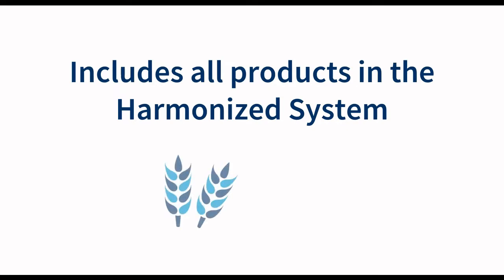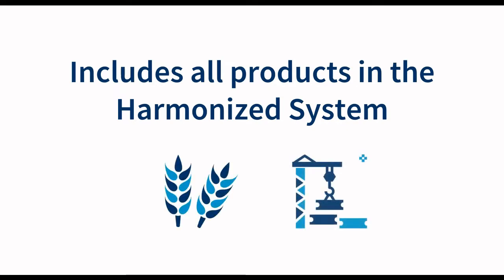The tool includes information on all products classified within the 97 chapters of the Harmonized System, including all agricultural and non-agricultural products.